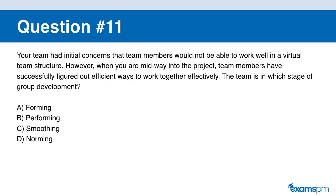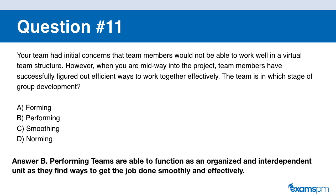Question number eleven. Your team had initial concerns that team members would not be able to work well in a virtual team structure. However, when you are midway into the project, team members have successfully figured out efficient ways to work together effectively. The team is in which stage of team development? A: forming. B: performing. C: smoothing. D: norming. If you said B, you are correct. Performing teams function as an organized, interdependent unit and find ways to get the job done smoothly and effectively, based on Tuckman's ladder.